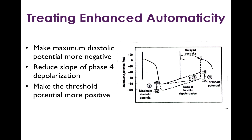Finally, you can make the threshold potential more positive — move the threshold potential from negative 65 millivolts to negative 45 millivolts — and again make it take longer for phase 4 to occur.